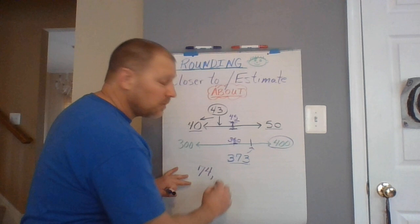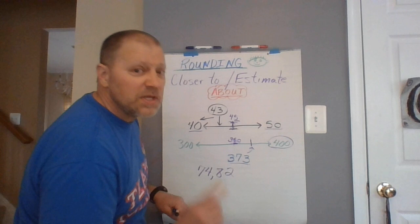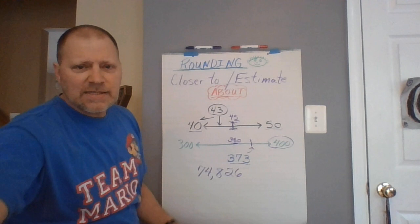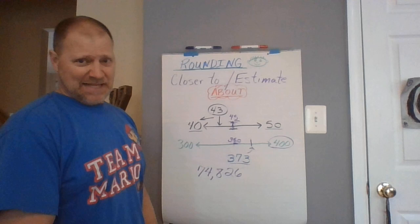What was that? 800, 20, what? 26. Okay. Now, here's where it gets a little bit tricky. Let's say I have this large number of 74,826.